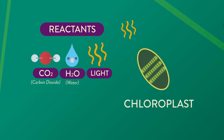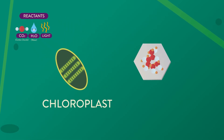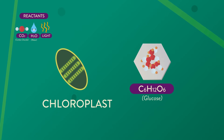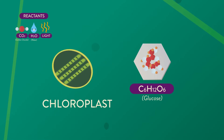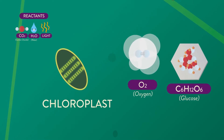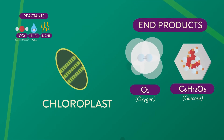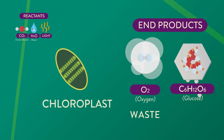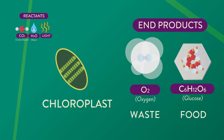These materials enter the chloroplast, which converts them into the end products: C₆H₁₂O₆, otherwise known as glucose or sugar — in this case, food. And the by-product, O₂, oxygen. Oxygen is released by the plant as waste, while the glucose is used by the plant as food.